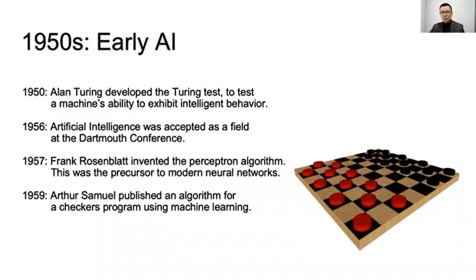Let's start from the 1950s. First, Alan Turing developed the Turing test to test a machine's ability to exhibit intelligent behavior. His test tried to answer the question of how to distinguish between machine and human, helping us analyze whether we get an answer from a machine or a human. In 1956, Artificial Intelligence was accepted as a field at the Dartmouth Conference.